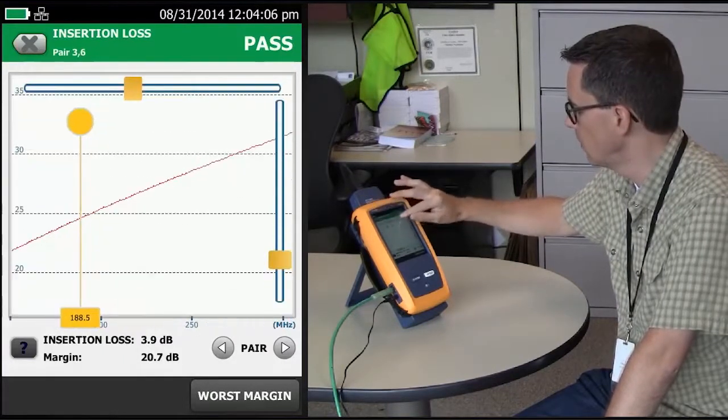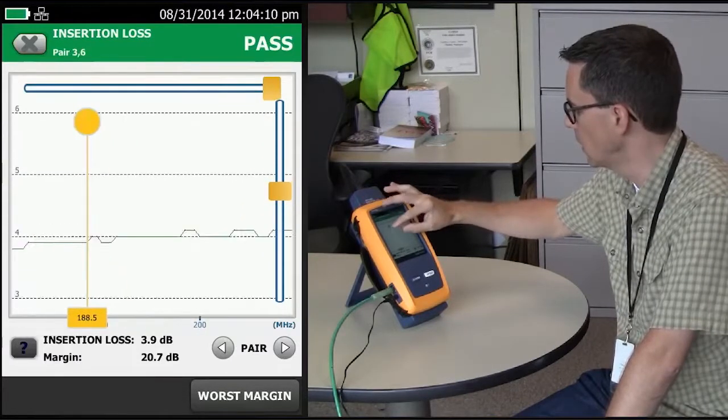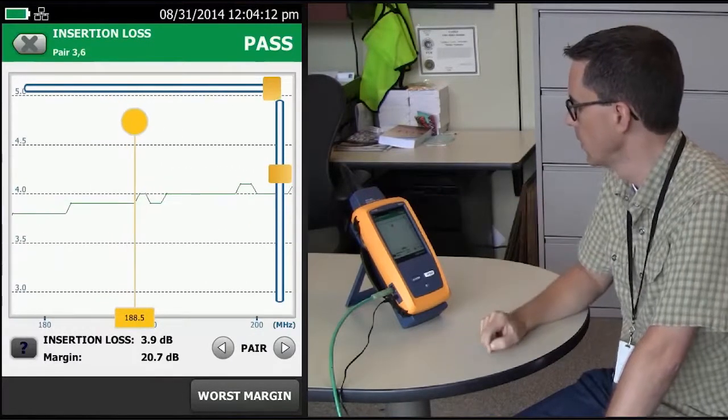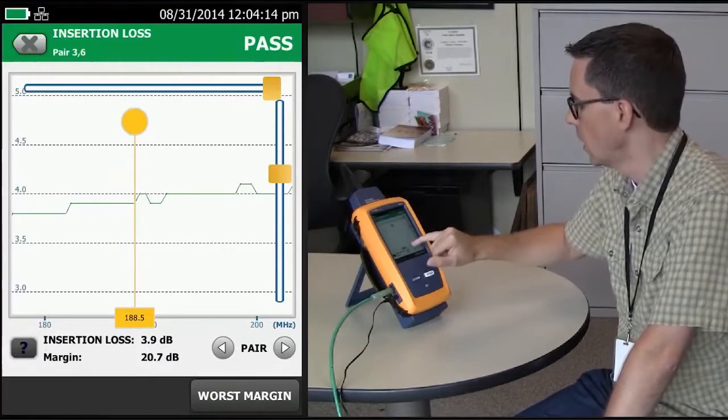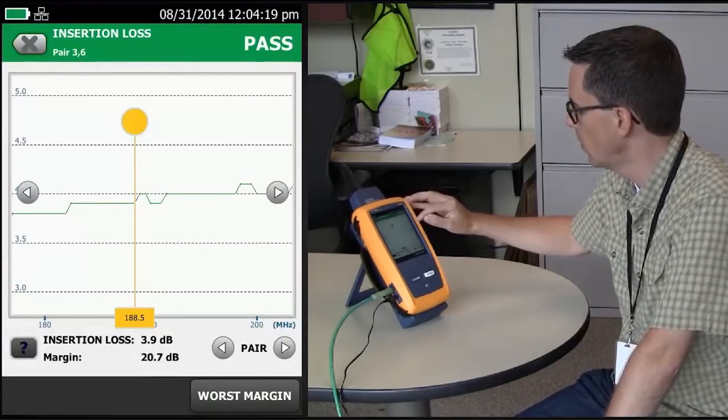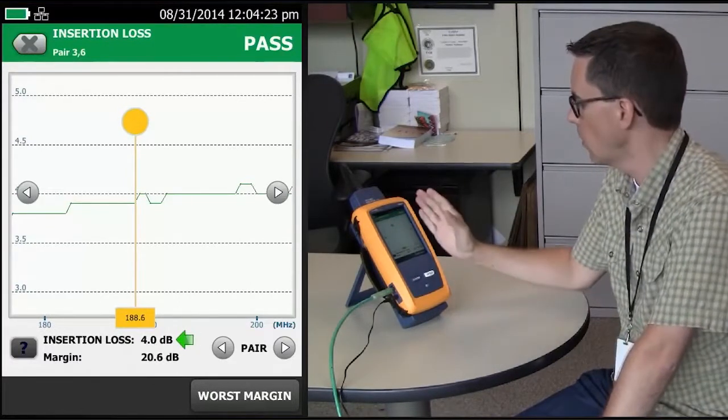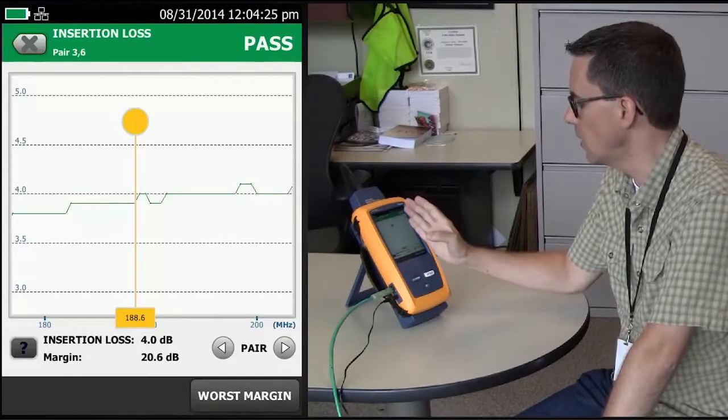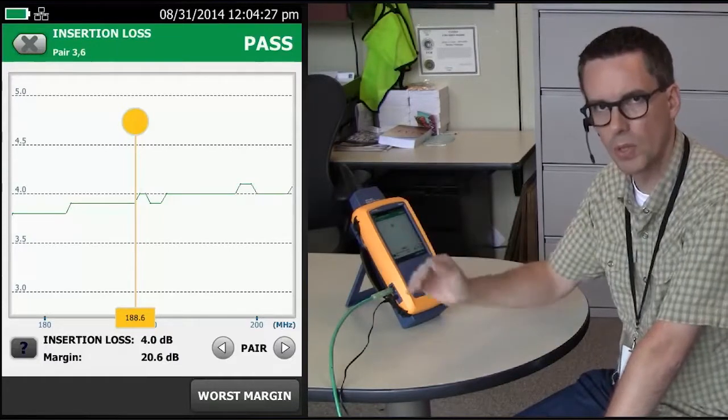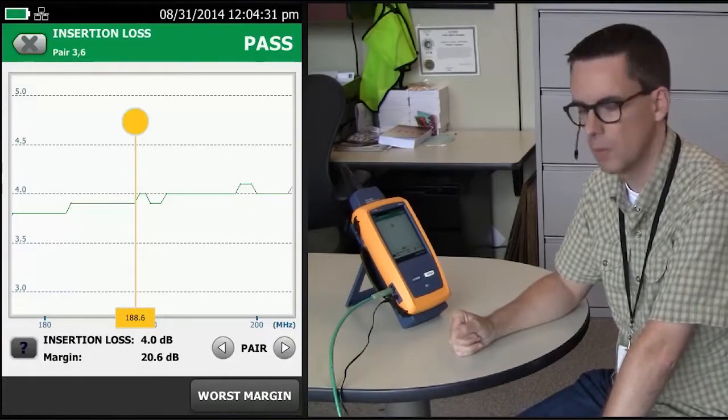I'm going to zoom in. Our insertion loss here is showing 3.9 dB, but the moment I move it forward, it changes to 4 dB. So what we can say here is 188 and a half megahertz and backwards, we're actually going to ignore all those crosstalk measurements.